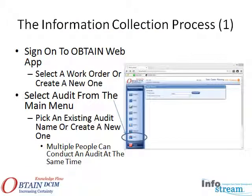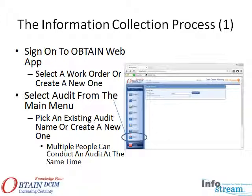Audits are easy and fast with Obtain. The information collection process produces an exception list of assets not represented correctly in the DCIM knowledge base. The collection process begins by signing on to Obtain with a mobile device on the computer room floor. When the user is signed on to an existing or new work order, they can select Audit from the main menu, then select an existing ongoing audit or create a new one. Multiple users can conduct the same audit at the same time, as the Obtain server can coordinate multiple inputs simultaneously.